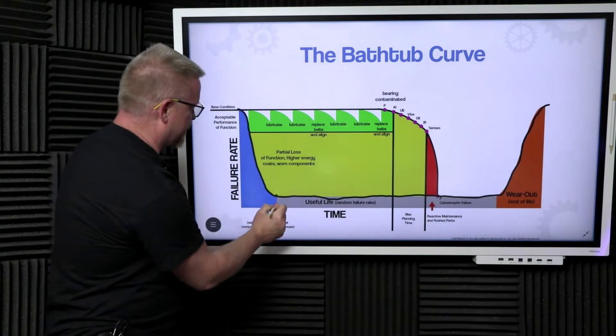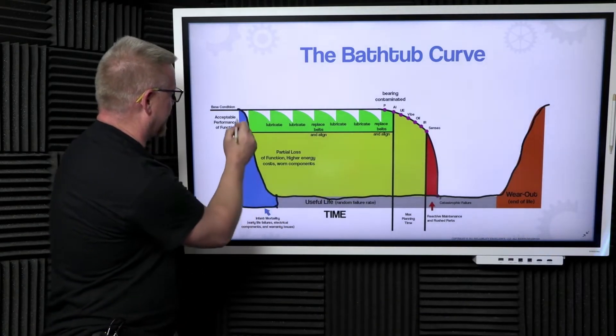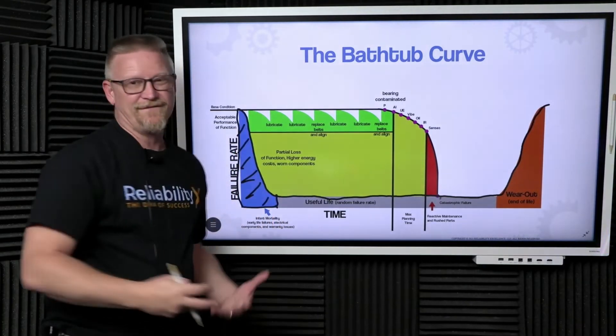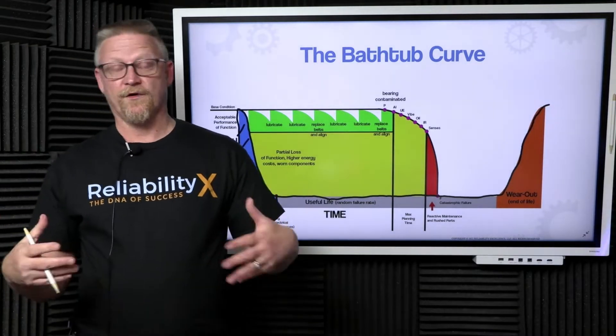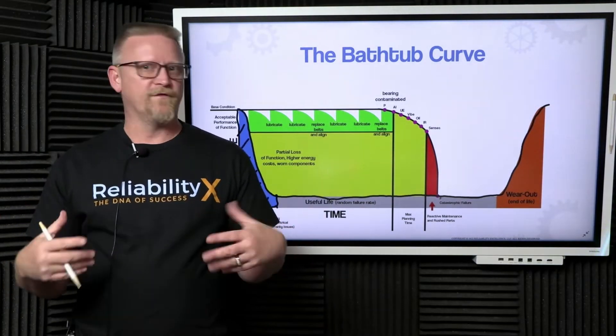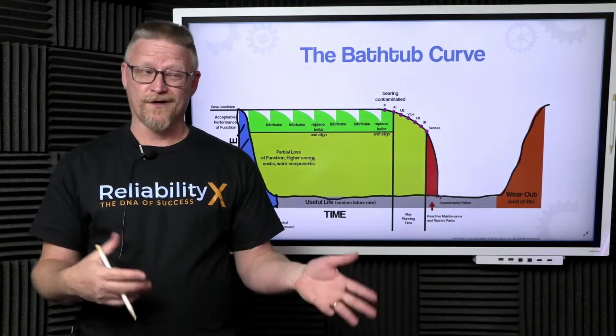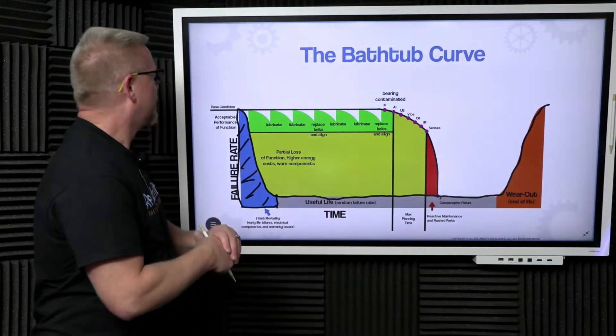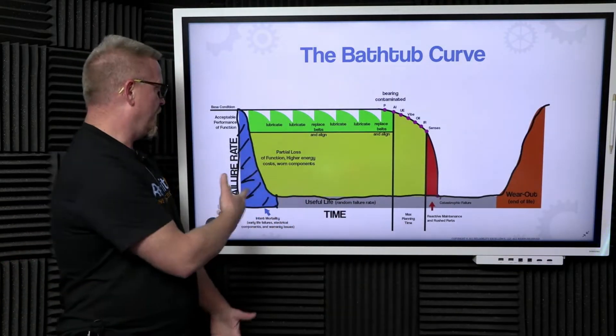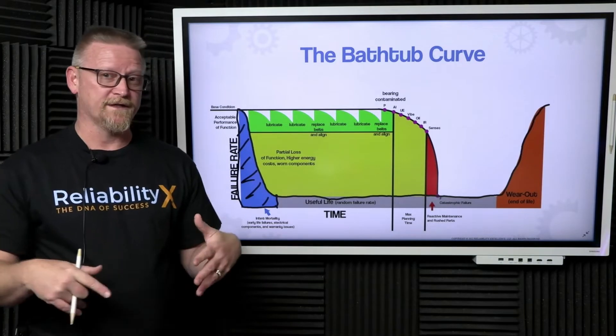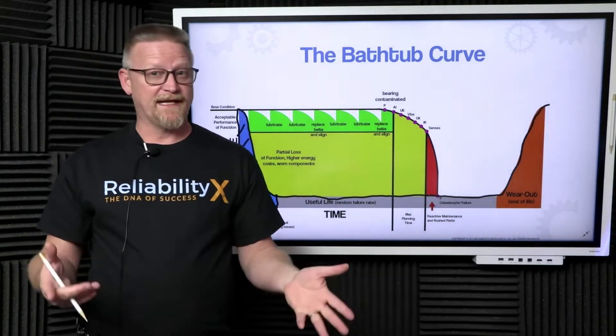We have initially what's called infant mortality here in the blue. Infant mortality are things like electrical components that's why they're bench top tested before they ever ship them out—sometimes they work, sometimes they're not.